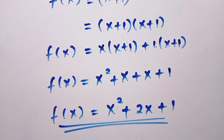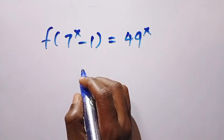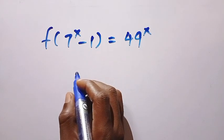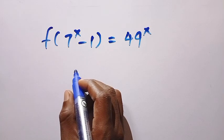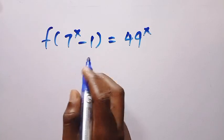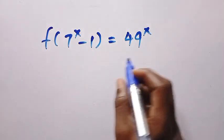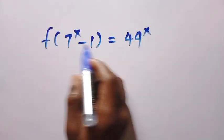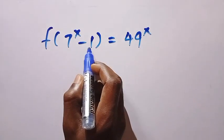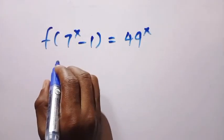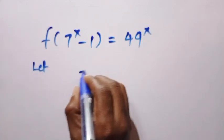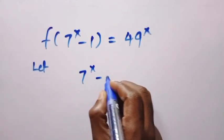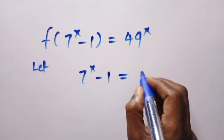I'll be solving this in another method, and this second method will be the best method. In this second method, I'm going to be using form manipulation, whereas the first one was based on substitution. At the right-hand side, which is 49 raised to the power x, I want to express f in terms of 7 to the power of x minus 1. So suppose I let 7 to the power of x minus 1 equal t, then let's take the square of both sides.